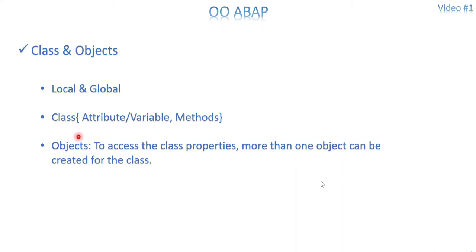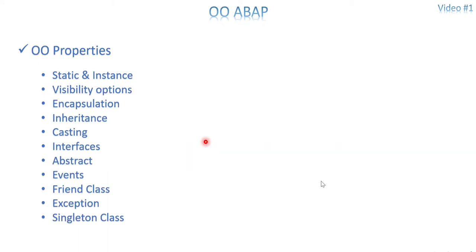Inside a class, we have attributes — which are nothing but variables — methods, events, and interfaces. These are the main options available inside a class. You can consider a class as a container or a folder: inside that folder it has its own attributes, its own methods, its own events, and interfaces. To access the properties of the class — whether it is an attribute or a method — you need an object. An object is what you use to access the class properties.